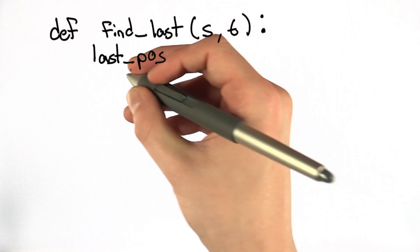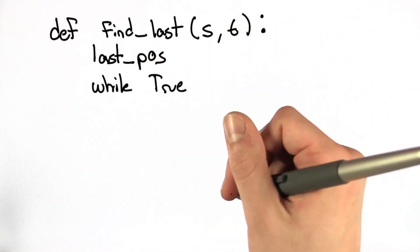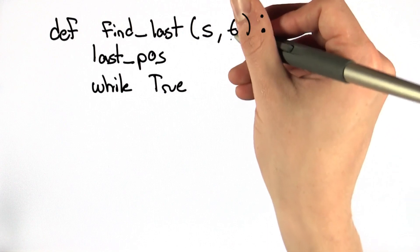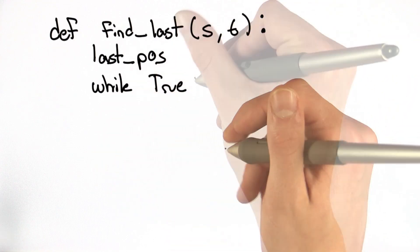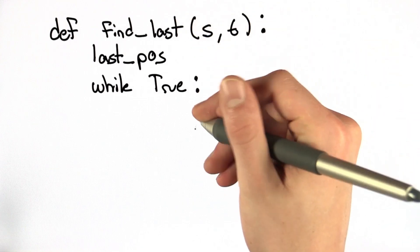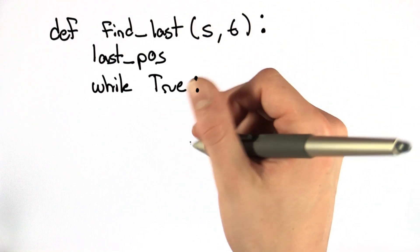So let's use a variable called last_pos. The overall plan here is while we keep finding occurrences of t, we're going to keep running the find function and updating our offset. So let's do that. While true, since we don't know when we want to terminate yet,